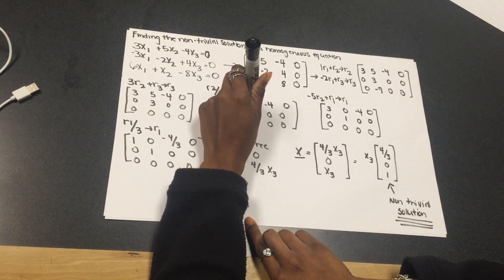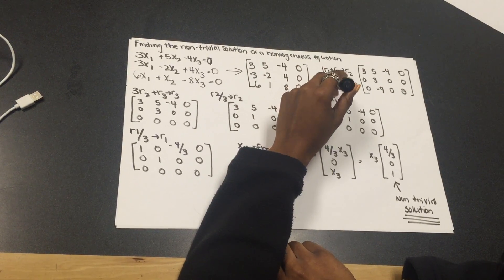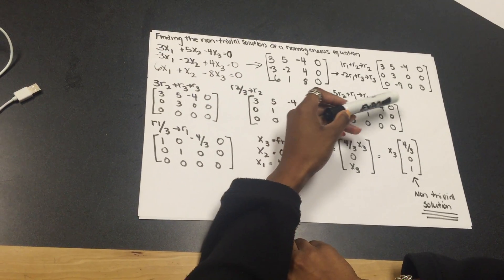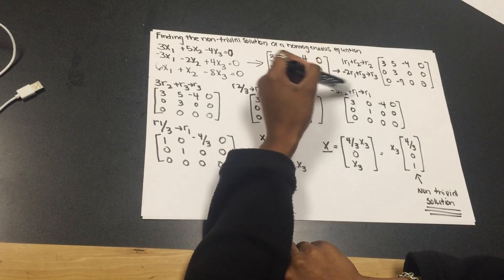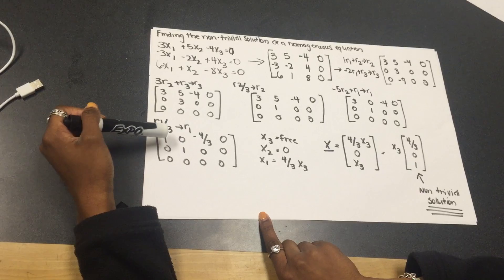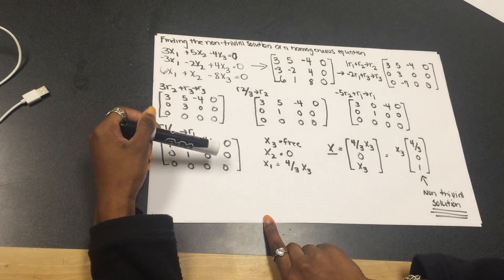Now, I have to get rid of this right here. So, you do negative 5 times row 2 plus row 1, and put that into row 1. Now, I have 3, 0, negative 4, and 0 for row 1. Next, I want to divide the whole row by 3. So, I do row 1 divided by 3, and I put that back into row 1. So, I get 1, 0, negative 4, 3, 0, 0, 1, 0, 0.